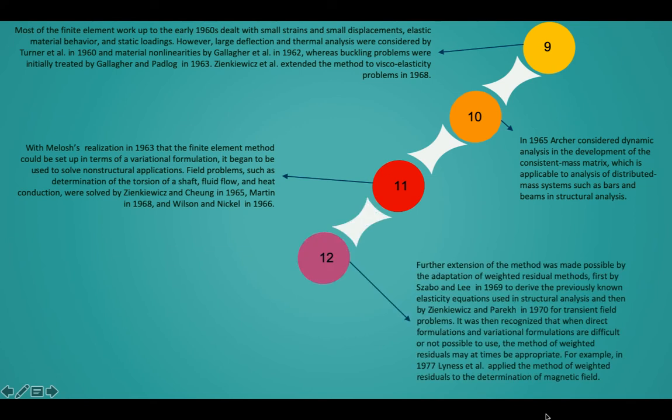Further extension of the method was made possible by the adaptation of weighted residual methods, first by Sabo and Li in 1969 to derive the previously known elasticity equations used in structural analysis and then by Zinkievich and Parikh in 1970 for transient field problems. It was then recognized that when direct formulations and variational formulations are difficult or not possible to use, the method of weighted residuals may at times be appropriate. For example, in 1977 Line S. Al applied the method of weighted residuals to the determination of magnetic field.